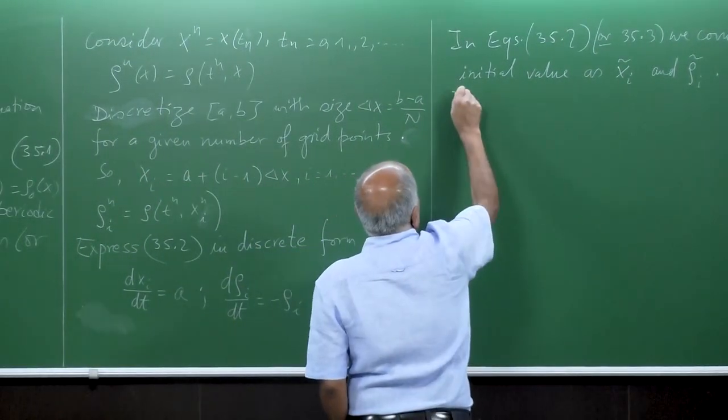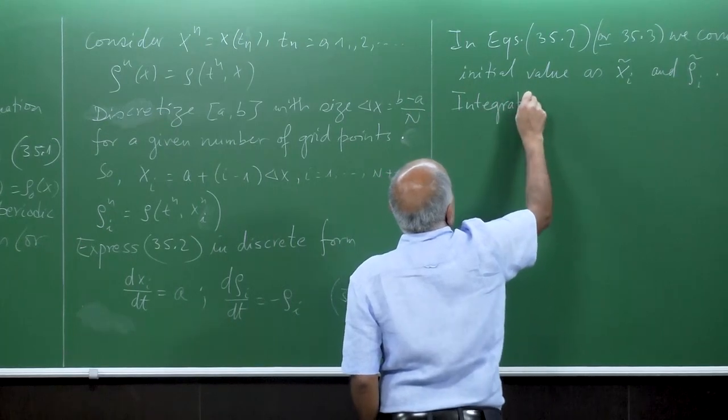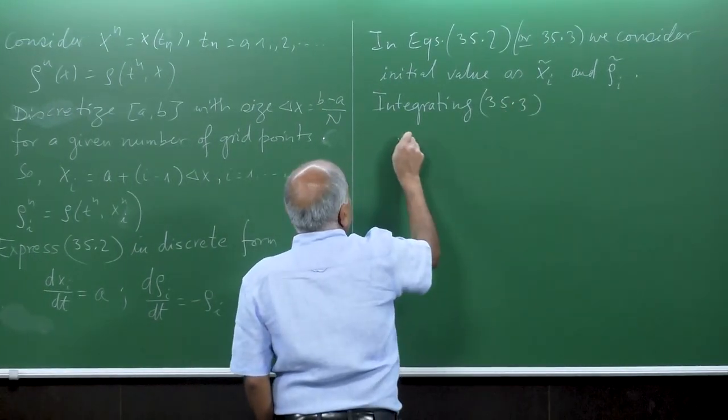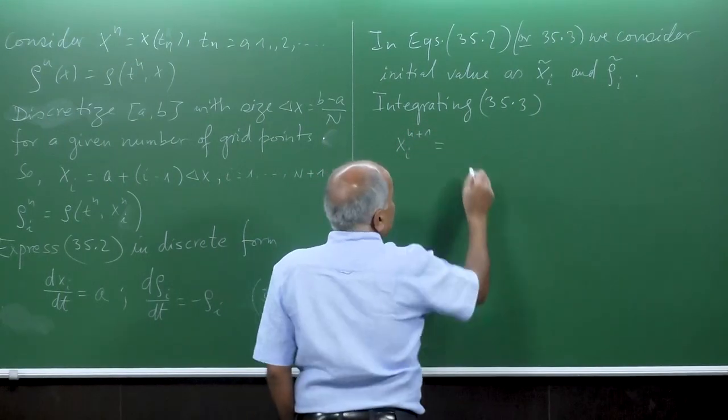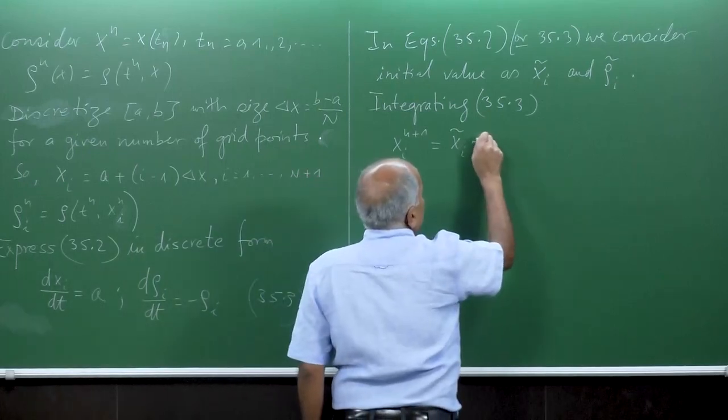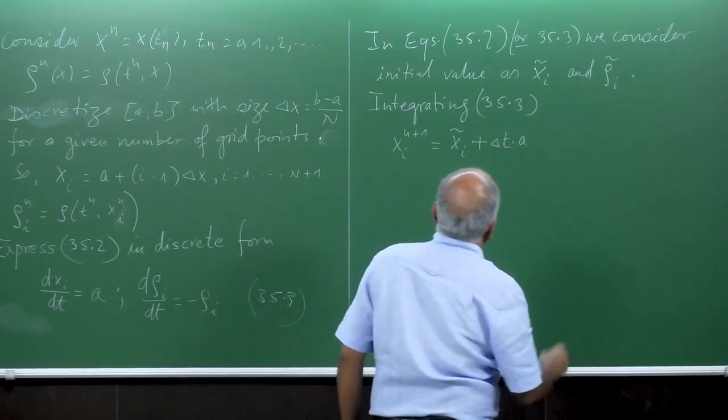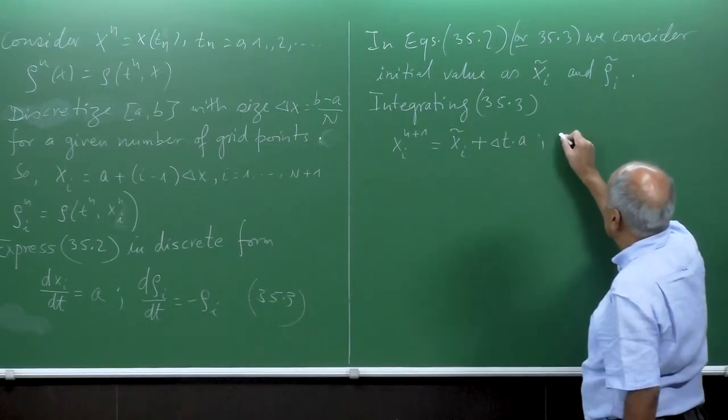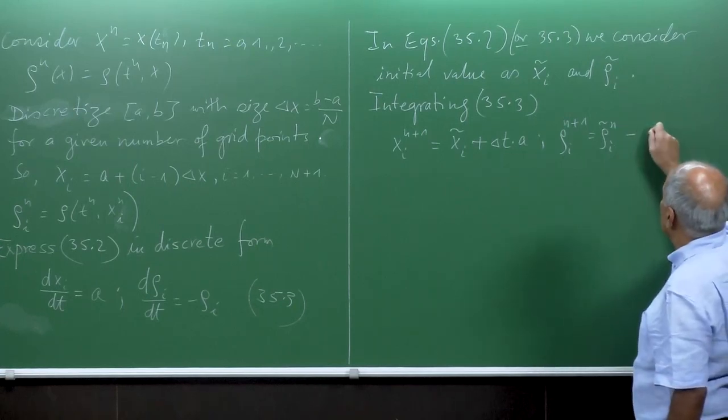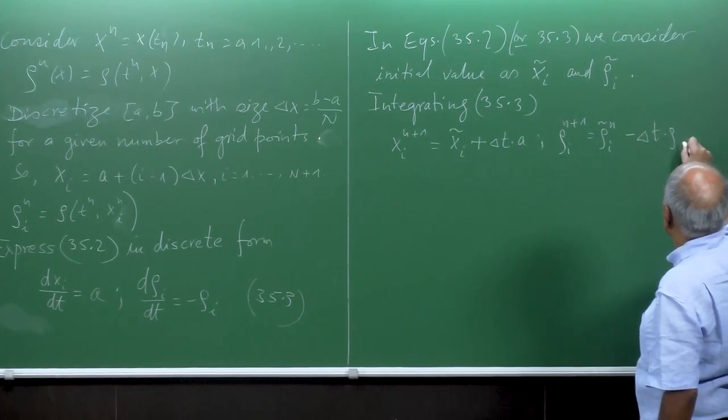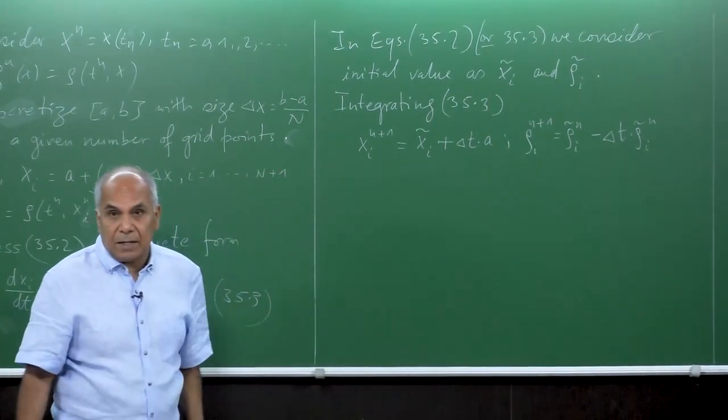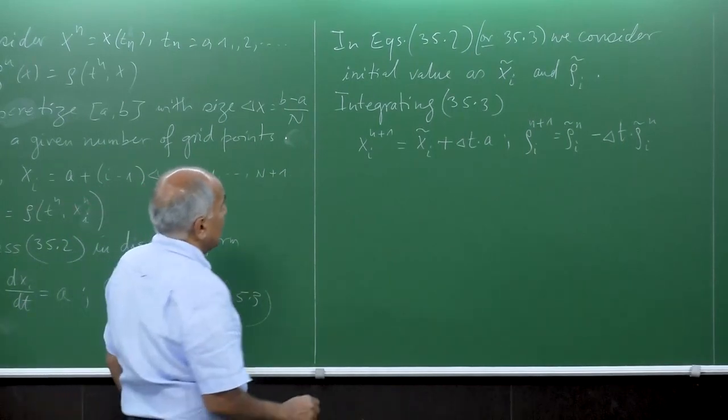So integrating 35.3, we get x i of n plus 1 is equal to x i tilde plus delta t times a, and rho i of n plus 1 is rho i of n tilde minus delta t times rho i of tilde n. Now we have to determine the initial value.